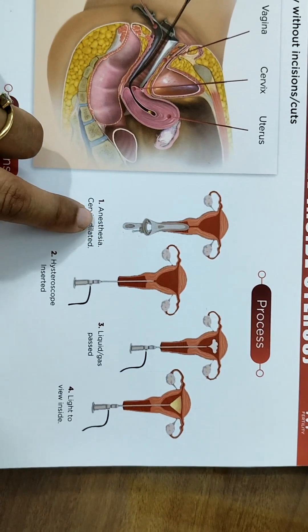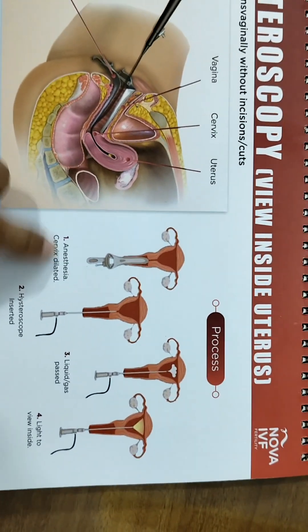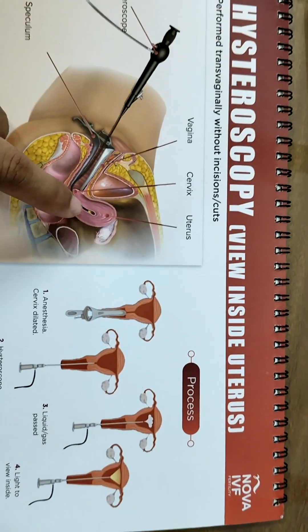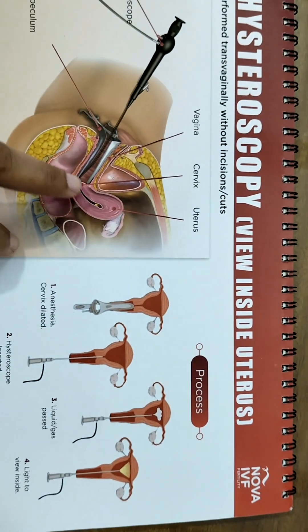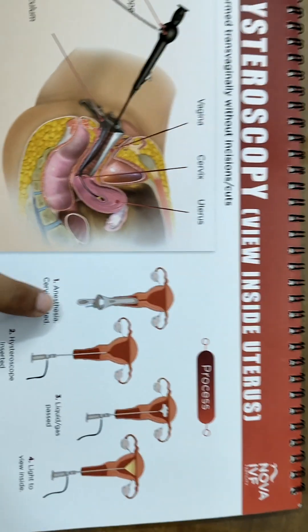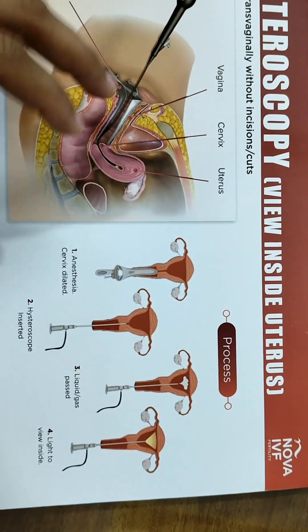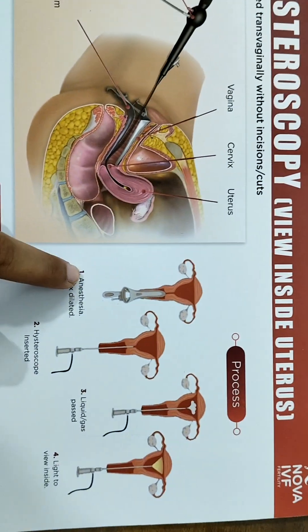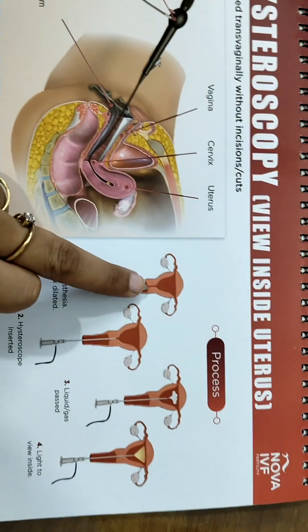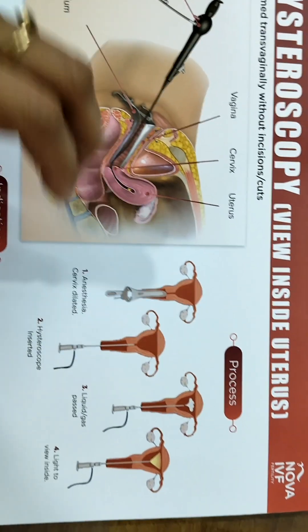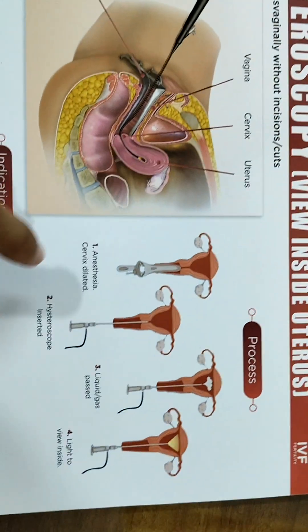The first step is anesthesia. But nowadays, because the caliber is very, very thin and just to diagnose any uterine problem, we can do it even without anesthesia — in those cases it is known as office hysteroscopy. But the bulk of hysteroscopy is still done under anesthesia. The first procedural step is to dilate the cervix, that is, dilate the mouth of the uterus with the help of dilators.